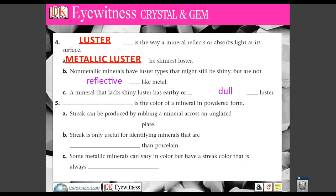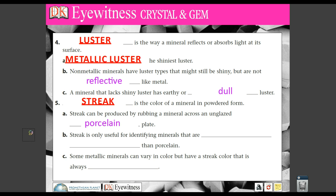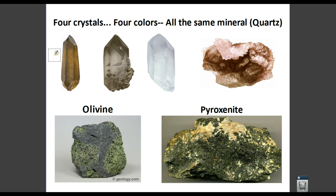Here's another test: streak testing. Streak is the color of the mineral in powder form. Streak testing can be produced by rubbing a mineral across an unglazed porcelain plate — the material that's used in plates and china and things of that nature. Streak is only used for identifying minerals that are softer than porcelain. For example, if we were to do a streak test of quartz — all four types — you would have the same streak. And if you pulled olivine and pyroxenite out of the ground and thought they looked the same, you could do a streak test and determine they're both very different minerals.